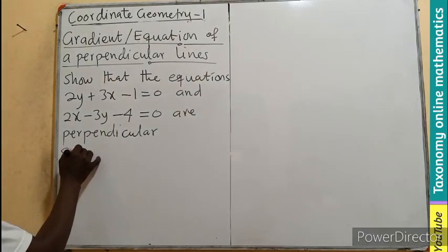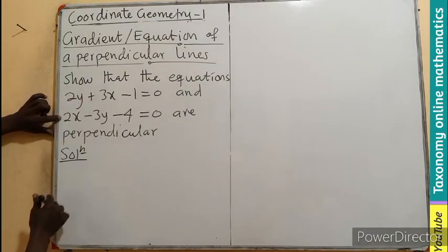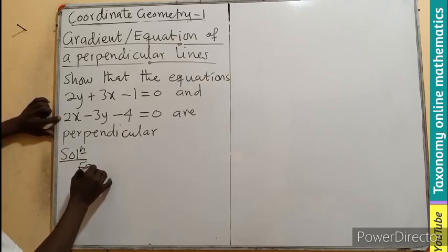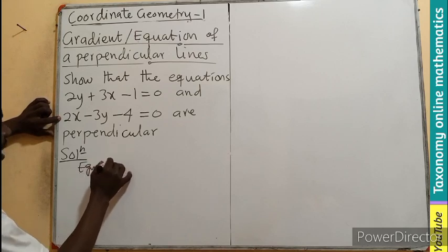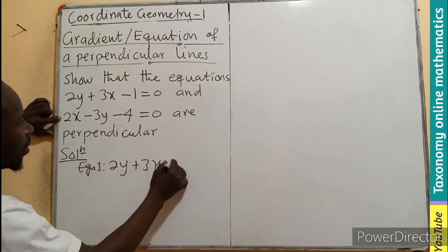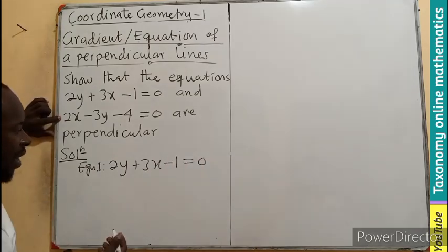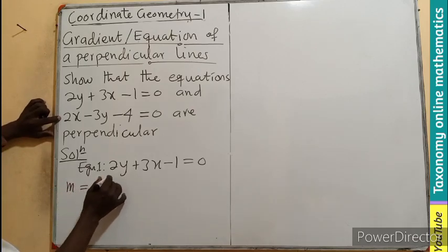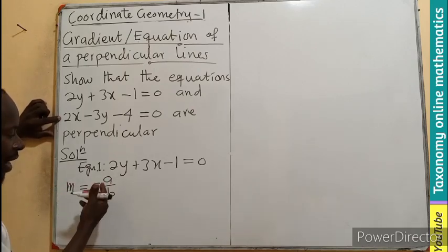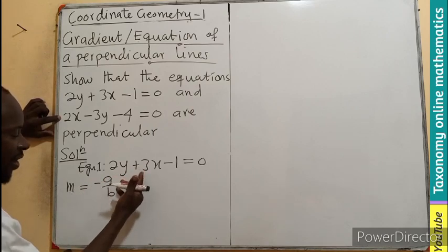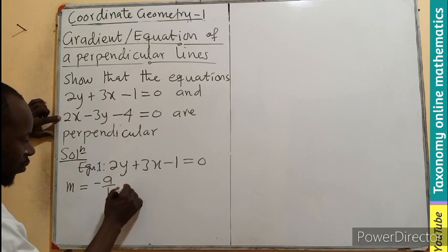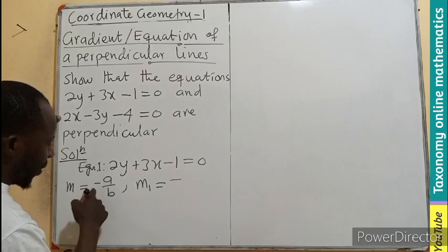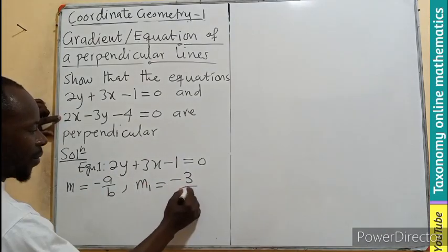So, we can say that picking the first one, we have equation 1. I will be having 2y plus 3x minus 1 equals to 0. We can find the gradient directly from here. So, here we know gradient equals to minus A over B. Minus A is the number. Then A is the number in front of X. B is the number in front of what? Y. So, here my gradient 1 will be 3 negative come first. Then 3 divided by what? 2.